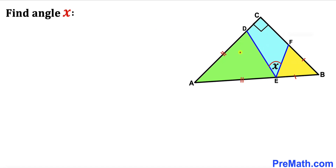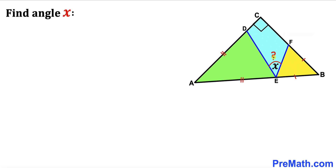Welcome to Pre-Math. In this video we have these green and yellow triangles fully confined in a right triangle ABC, as you can see in this diagram. Both the green and yellow triangles are isosceles triangles, and we are going to calculate angle X.